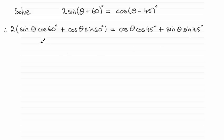Now at this point, I want to work out the exact values for these trigonometric functions: cos 60, sin 60, cos 45, and sin 45. So we've got cos 60°, which is 1/2 - I'll write that at the front, so that becomes 1/2 sin θ. Then we've got sin 60°, which is √3/2